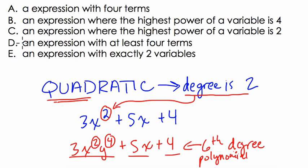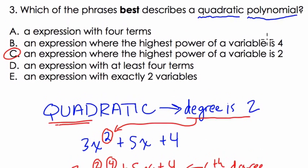So this is called quadratic. So it's literally choice C: an expression where the highest power of a variable is 2. Don't fall for choice B, where the highest power of a variable is 4. That would be a fourth degree polynomial. Thanks.